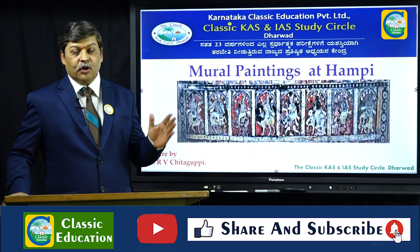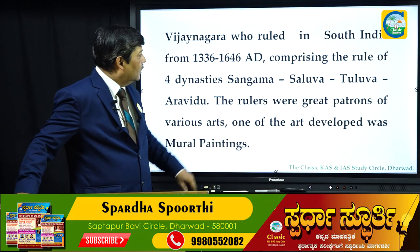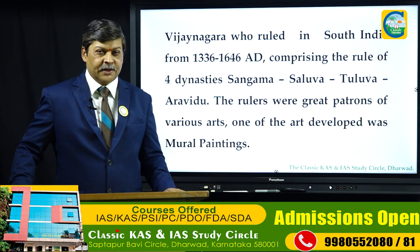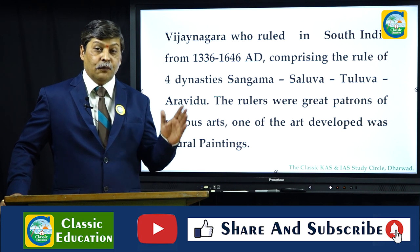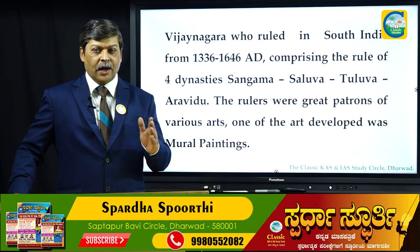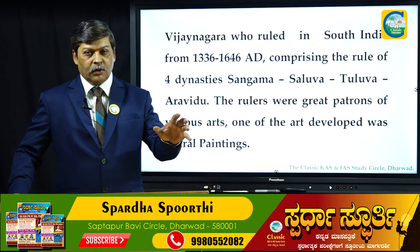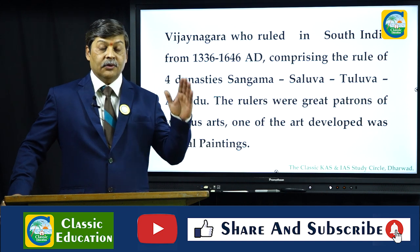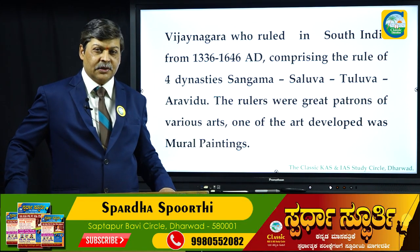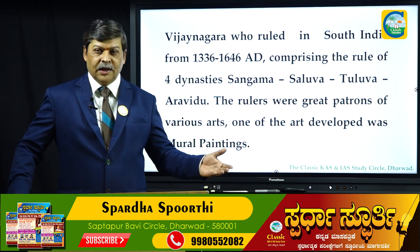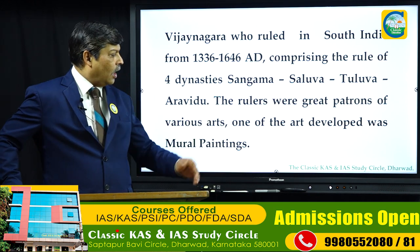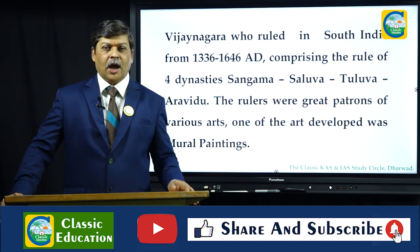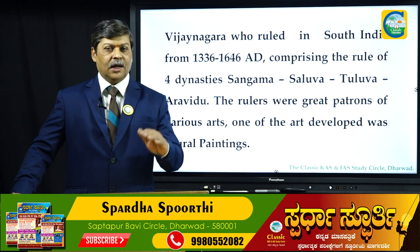The Vijayanagara Empire ruled in South India from 1336 to 1646, comprising the rule of four dynasties: Sangama, Salva, Tulva, and Arvidu. The rulers of these dynasties were great patrons of various arts like dancing, singing, music, and painting. One of the arts developed was mural painting — paintings done on walls.